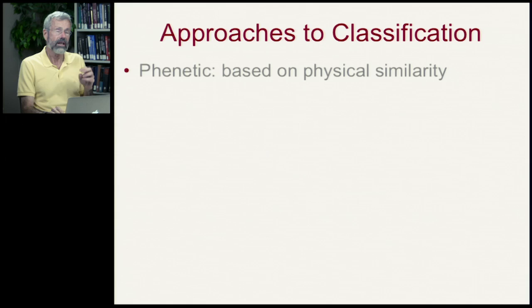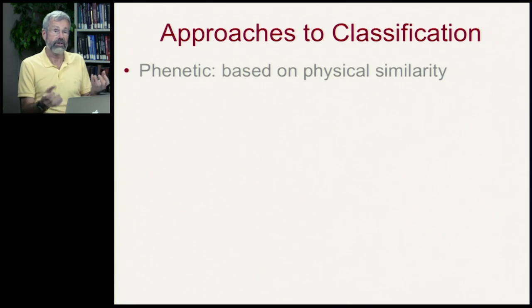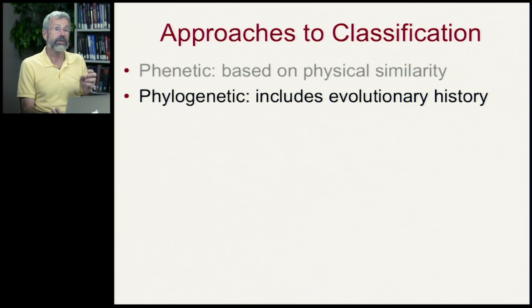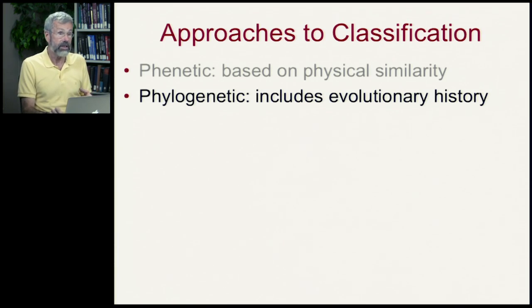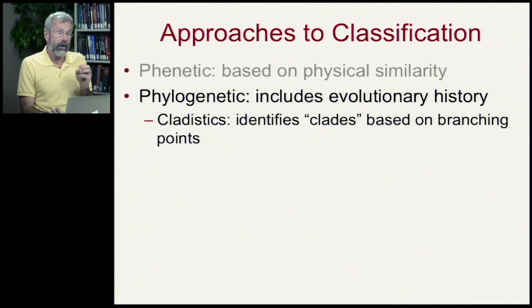Now we're ready to look at modern systems of classification. These take what's called a phylogenetic approach. We've seen phonetics, which was Linnaeus' method of just looking at physical similarities. What we want to do now is to take into account phylogeny, which actually means the evolutionary history of lineage. Within phylogenetics, there are several different specific techniques.